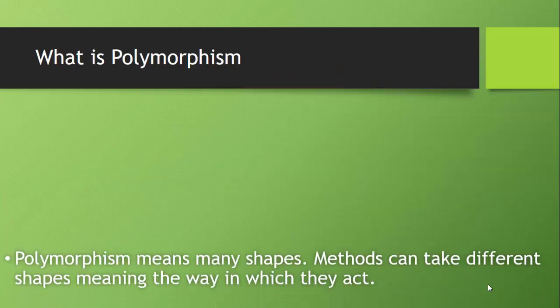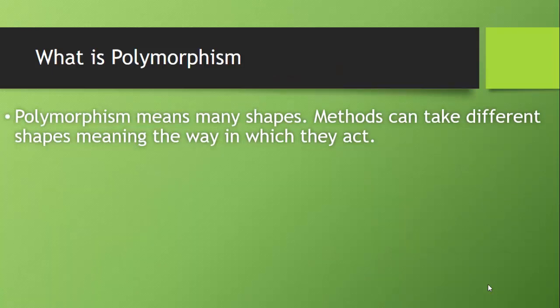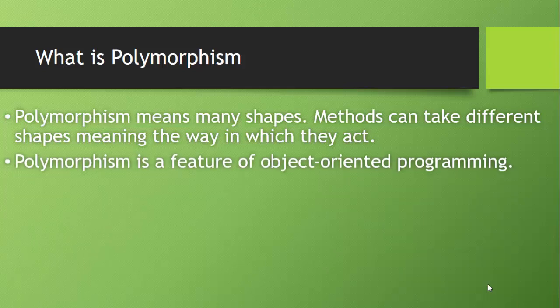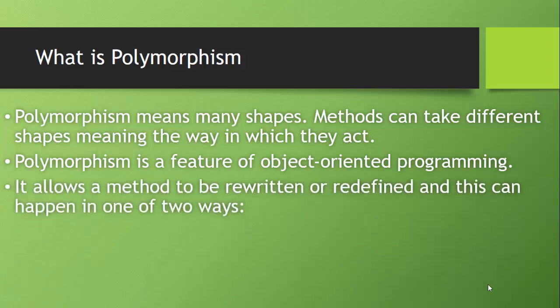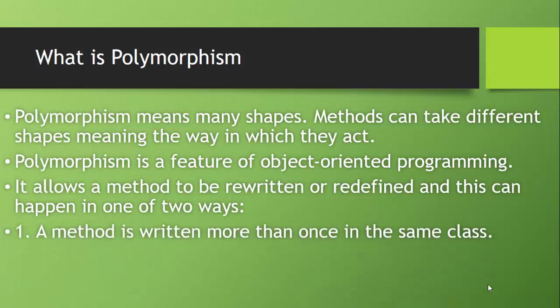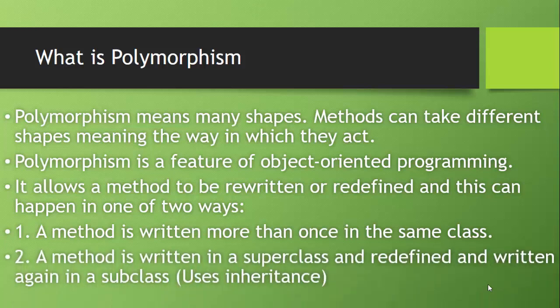So what is polymorphism? Polymorphism means many shapes. Methods can take different shapes, meaning the way in which they act. Polymorphism is a feature of object-oriented programming, and it allows a method to be rewritten or redefined. This can happen in one of two ways: the first way is a method is written more than once in the same class; the second way is a method is written in a super class and redefined and written again in a subclass using inheritance.